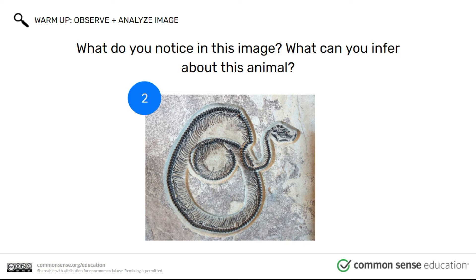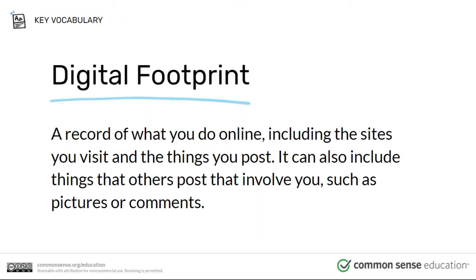What about us as humans? What kind of imprints do we leave behind in this world? Besides actual footprints and fossils, we also leave what's called a digital footprint. A digital footprint is a record of what you do online, including the sites you visit and the things you post. It can also include things that others post that involve you, such as pictures or comments. This is something we do not always have control of, and it's something that does not go away.